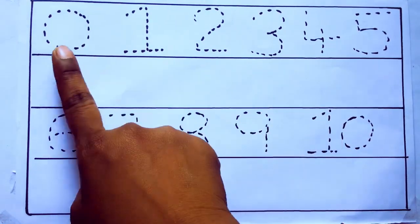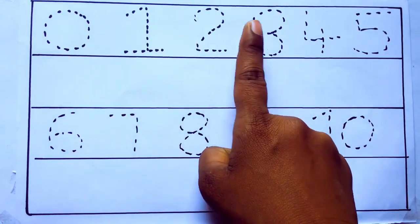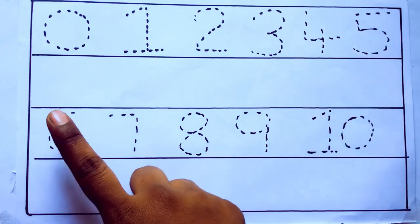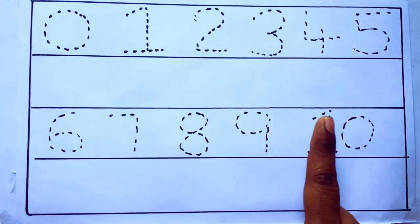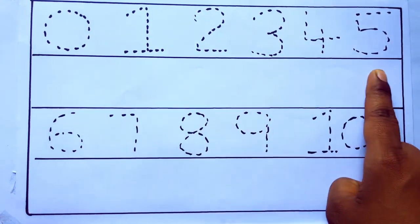0 to 10: 0, 1, 2, 3, 4, 5, 6, 7, 8, 9, 10 and rewriting the numbers.